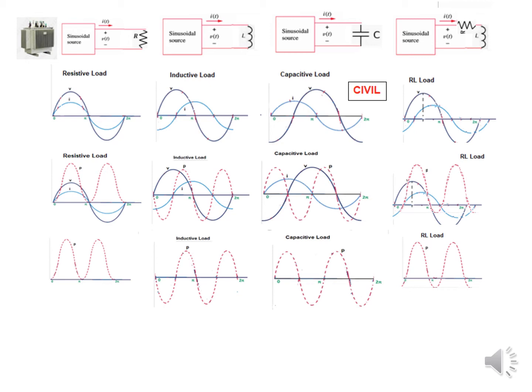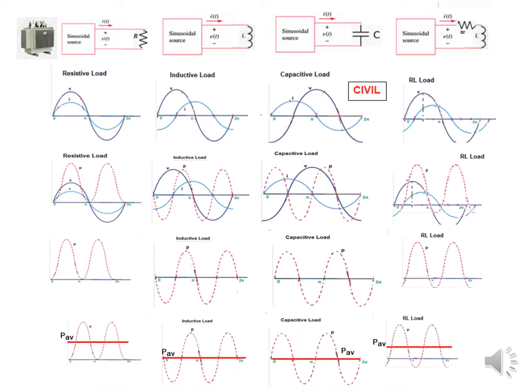Instantaneous power is not always very useful in practical life. To get an idea of the strength of the power, we take the average of power — P_average. For a resistor it has some value, say 200 watts, but for a pure inductor or capacitor the average power is zero because it is equally positive and negative on both sides. For an RL circuit the average power has some nonzero value, though less than a pure resistor. This is the usefulness of average power — it gives you an idea of how much power is being consumed.